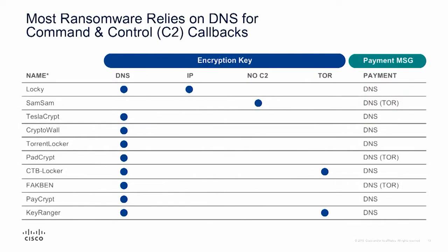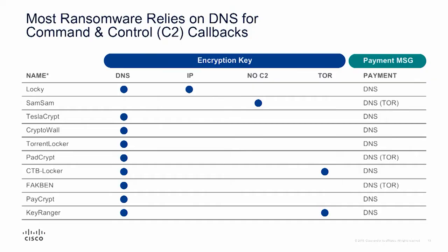Once it has communicated to the malicious infrastructure, a file is dropped and executed on the endpoint — that's where the magic happens. Your files are encrypted. They generate a key, keep that key, and then deliver a page with instructions on how to pay them, and hopefully how to unlock your files. Cisco's Talos security intelligence team found that pretty much all ransomware uses DNS for callbacks. That's quite useful if you have a technology around DNS, and Cisco does — our OpenDNS acquisition, now called Umbrella, is a security technology specifically around DNS and domains that can identify malicious domains and stop those callbacks.